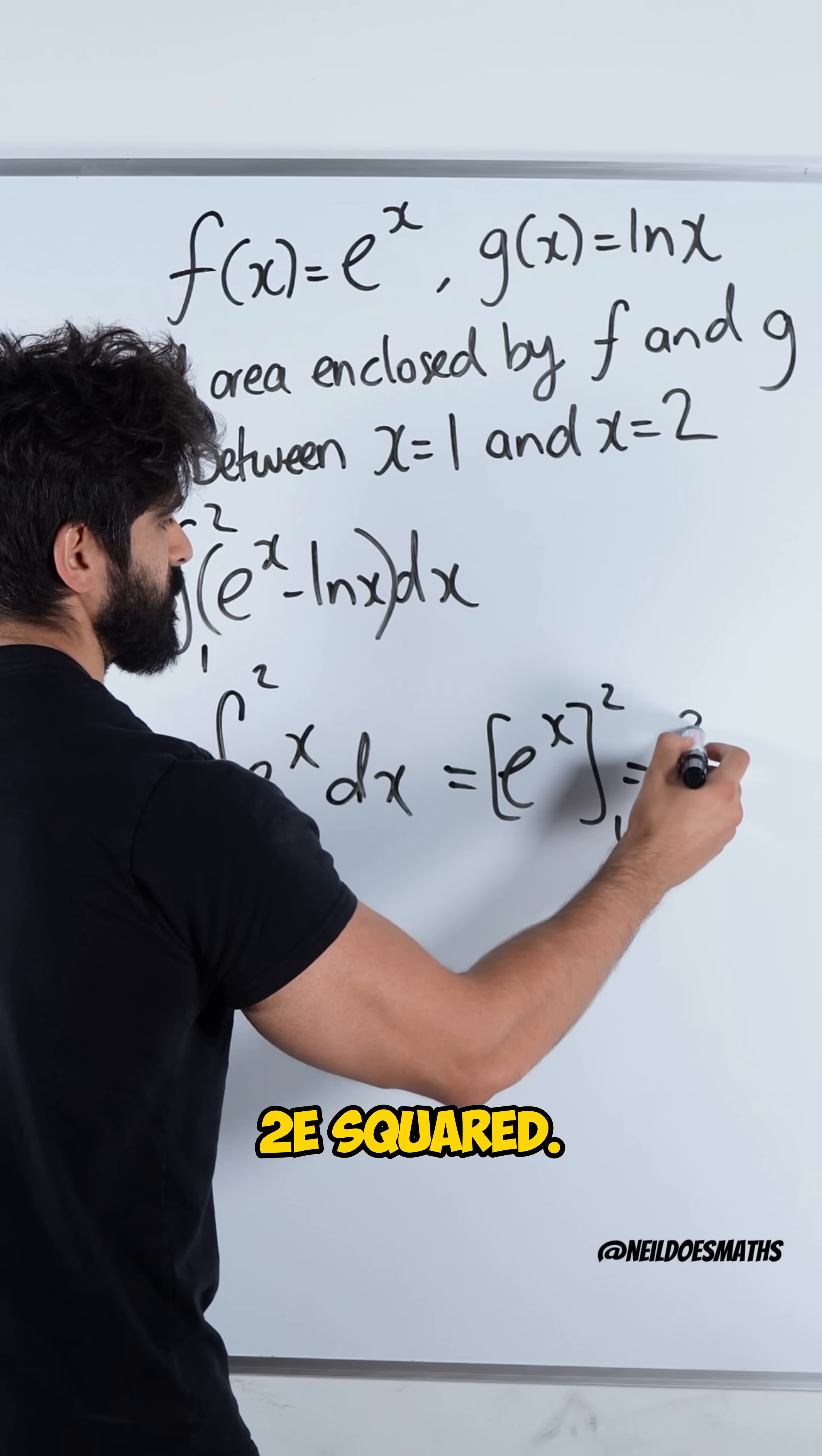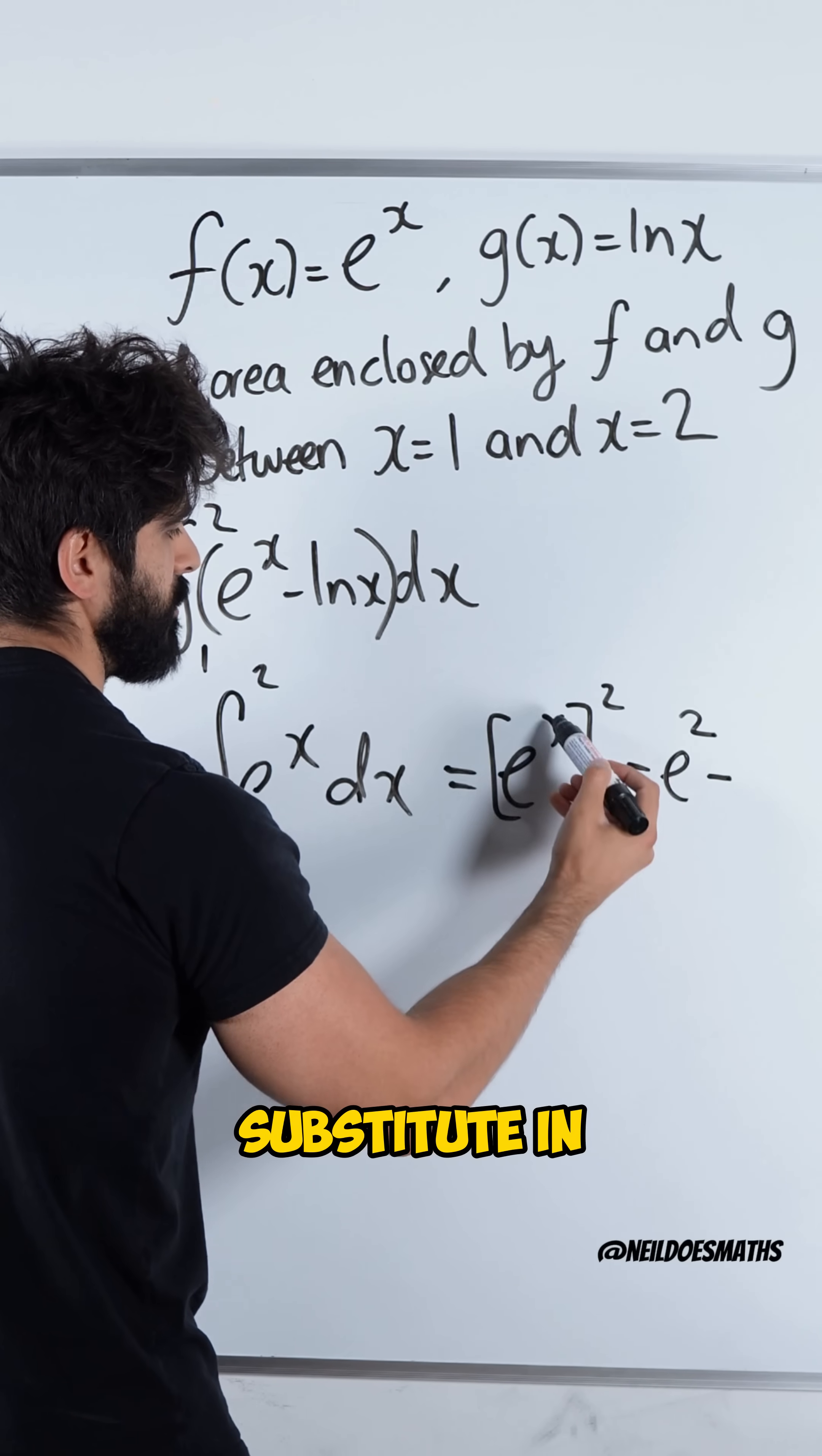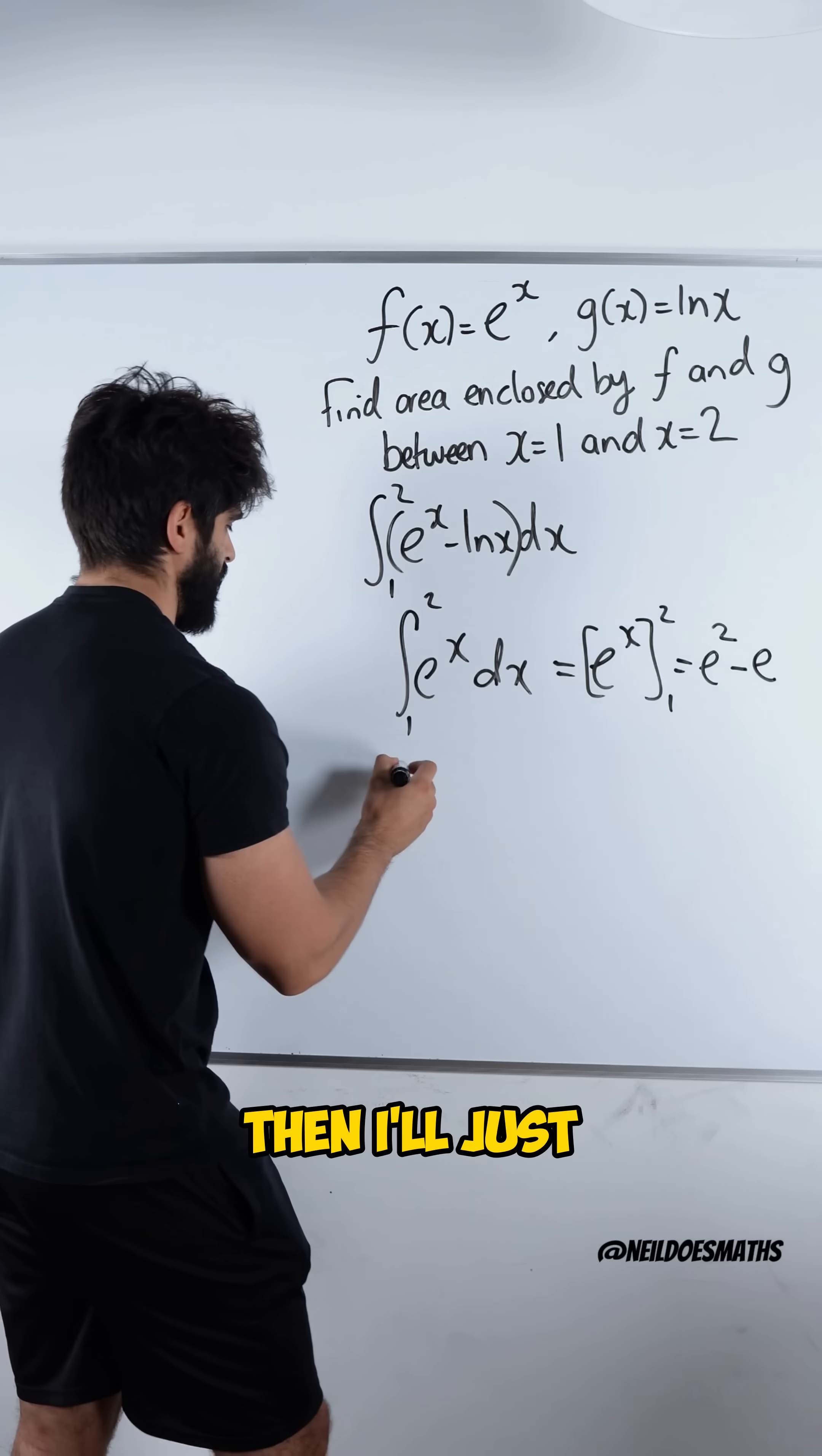Then we substitute in 2, e squared. Then we subtract, substitute in 1, e to the power of 1, which is just e. Then I'll just have ln x over here.